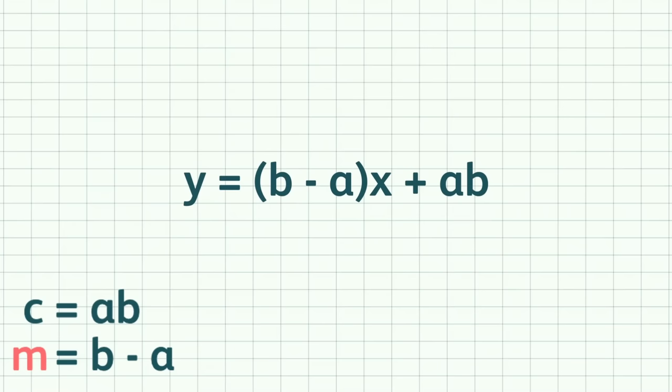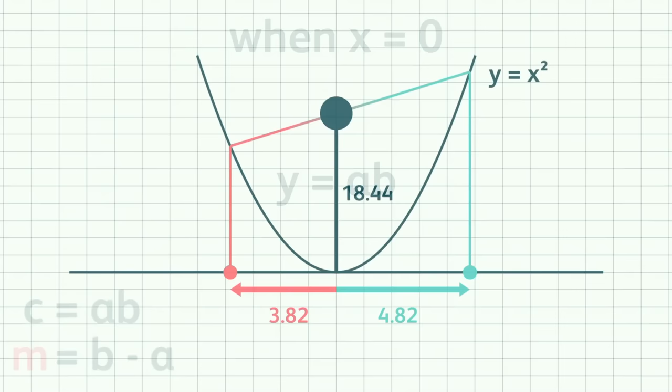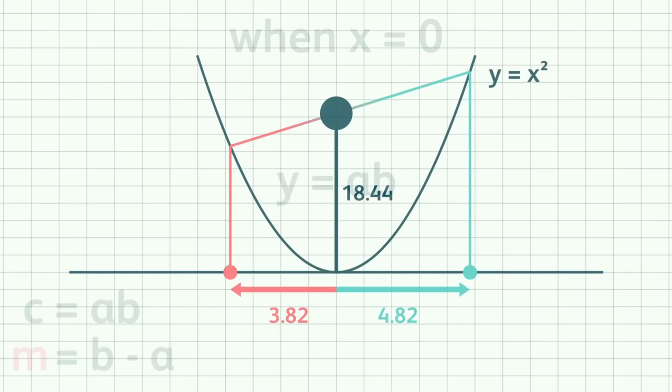Now, if we substitute in x equals 0, we get y equals ab. And it's precisely the point that gives us the result for our visual multiplication tool.